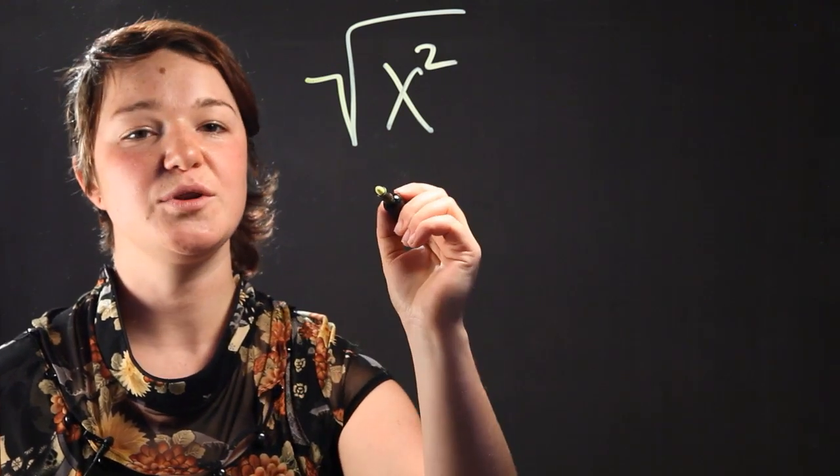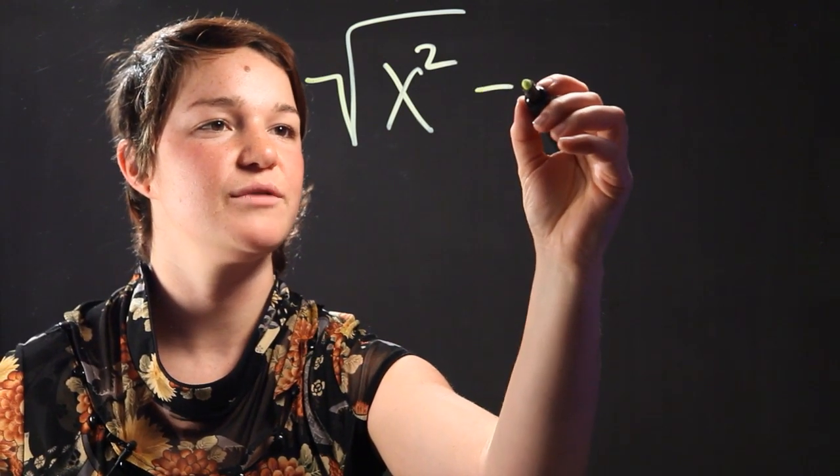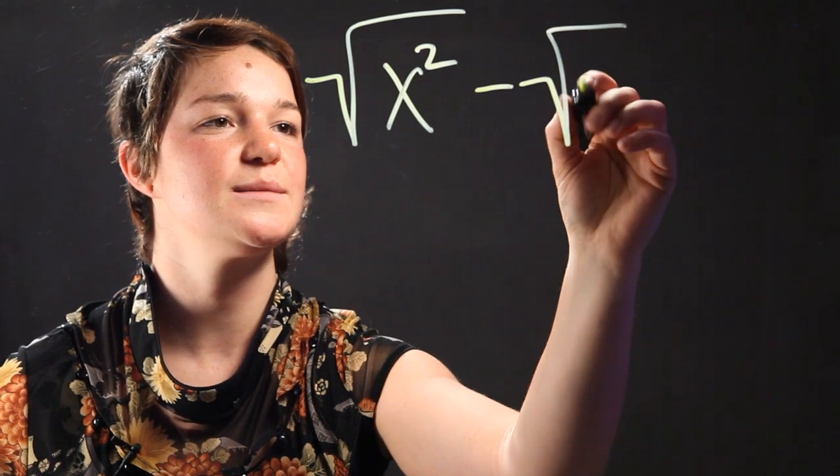So we have one radical variable. Let's subtract another radical variable from it. We're going to subtract y squared.